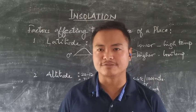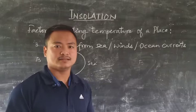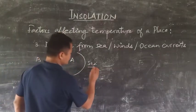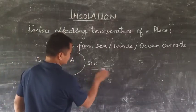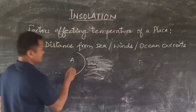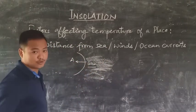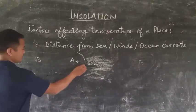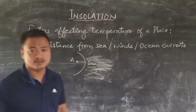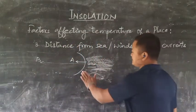Now we will move on to the third factor. Let us understand this factor with the help of a diagram. Here we have the sea — the water bodies. Place A is close to the water bodies and Place B is at a distance from the water bodies.